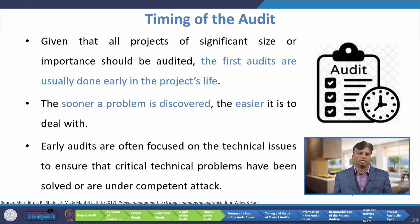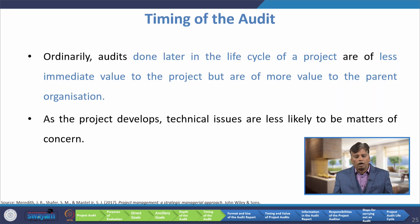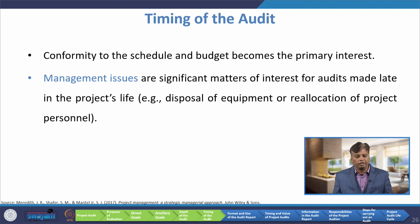Given that all projects of significant size should be audited, the first audits are usually done early in the project's life. The sooner a problem is discovered, the easier it is to deal with. Early audits are often focused on technical issues to ensure that critical technical problems have been solved or are under competent attack. Ordinarily, audits done later in the life cycle of a project are of less immediate value to the project, but are of more value to the parent organization. As the project develops, technical issues are less likely to be a matter of concern. Conformity to schedule and budget becomes the primary interest of any audit activities.